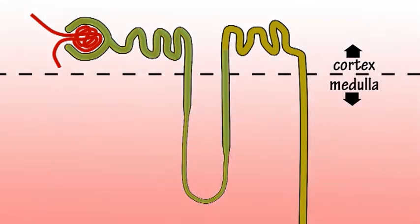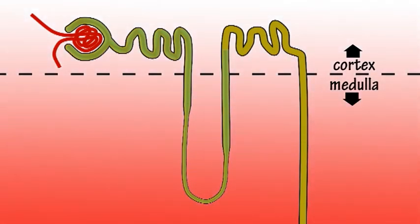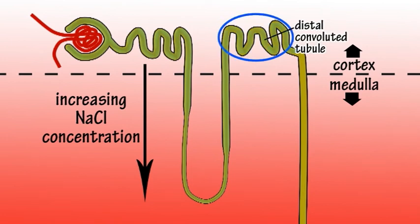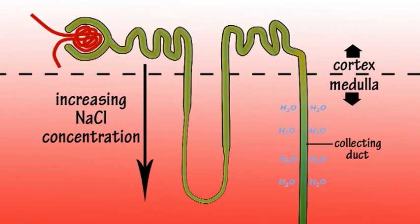The loop of Henle creates a concentration difference, or gradient, along its length, with the medulla tissue becoming increasingly salty the further away you go from the cortex. The ultrafiltrate in the distal convoluted tubules has a higher water concentration than blood plasma. Water is then reabsorbed by osmosis as it travels down the collecting ducts through the increasingly salty medulla.